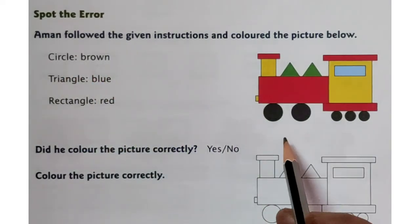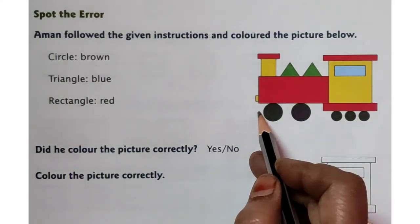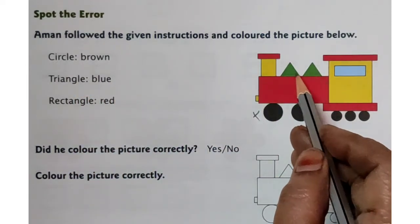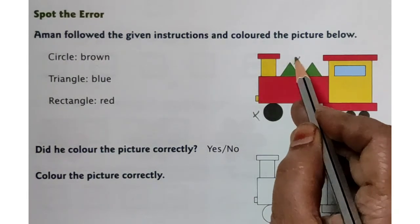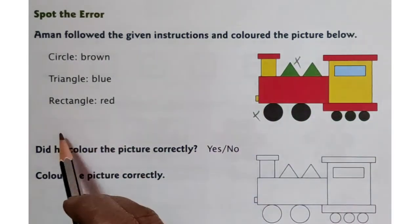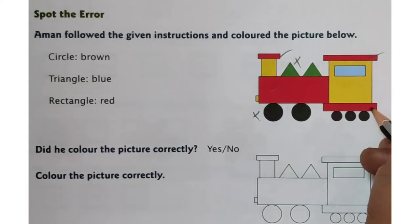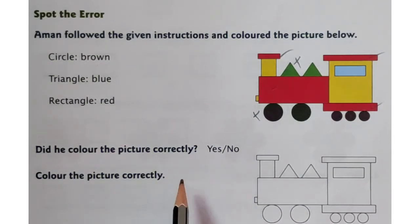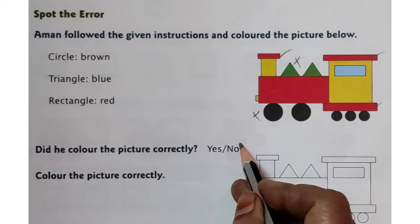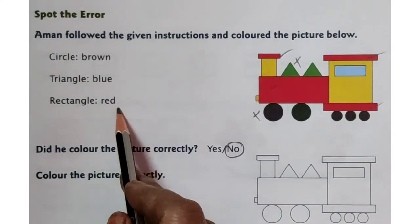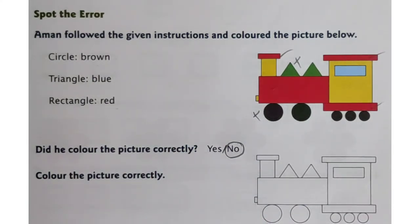Now, come on, check this figure. Circle — did you colour brown? No. He has coloured black. So, this is wrong. And triangle blue — did you colour triangle blue? No, he has coloured triangle green. So, even this triangle colour is also not correct. Rectangle red — yeah, he has coloured red, it is correct. So, did he colour the picture correctly? No, he has done some mistakes. Now colour the picture correctly. Based on these instructions, you have to colour this figure.